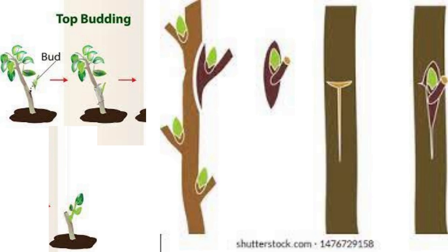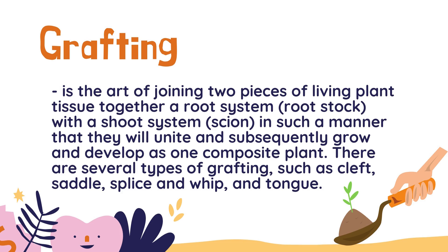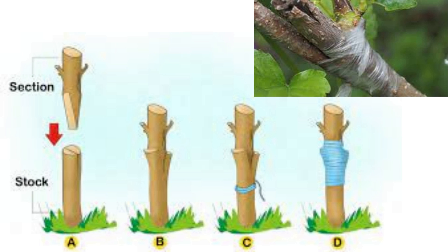Here is a photo of top budding. Next is grafting. It is the art of joining two pieces of living plant tissue together — a root system called the rootstock with a shoot system called the scion — in such a manner that they will unite and subsequently grow and develop as one composite plant. There are several types of grafting such as cleft, saddle, splice, and whip and tongue. Here is an image of the grafting procedure.